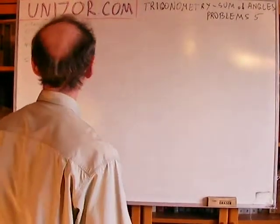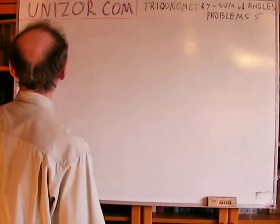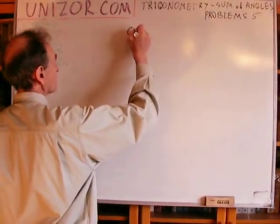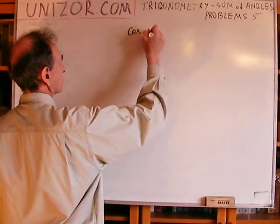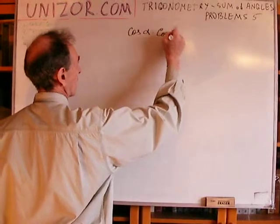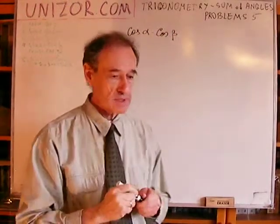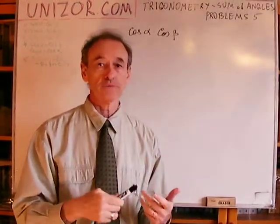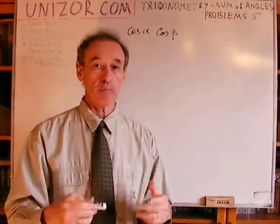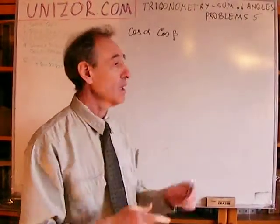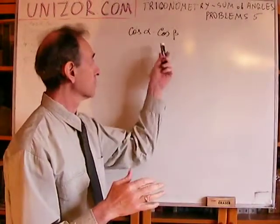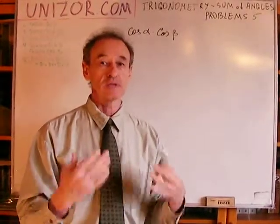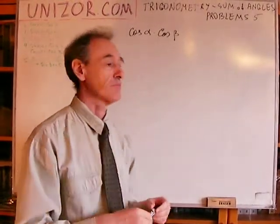Let's do it. The first problem is: you have a product of two cosines. The problem is to convert it into a sum of some trigonometric function of some argument. In short, convert a product of trigonometric functions into a sum of trigonometric functions.